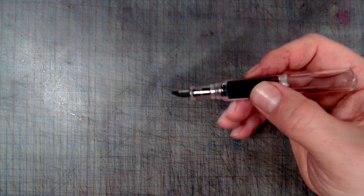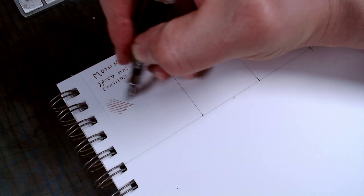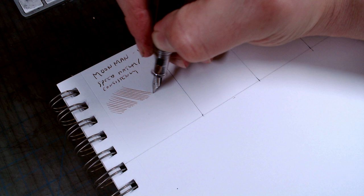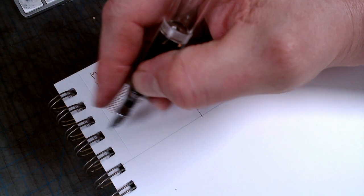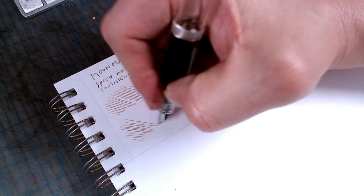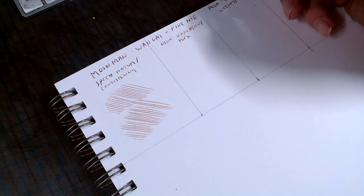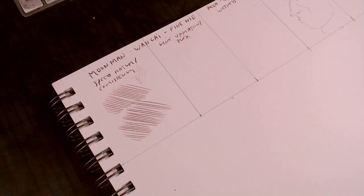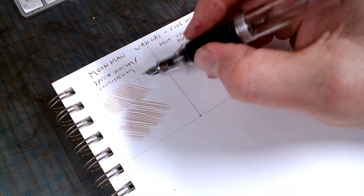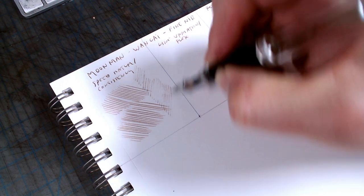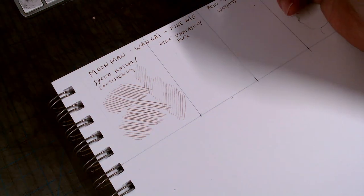Let's take this nib through my standardized three-part test. In my first test, I'm testing for consistency under pressure. Most pens will put down a line, but only a well-tuned nib will put down lines when those lines are put down very fast. This nib actually performed a little bit better than the other Moonman nibs I've tried, but that's really not saying all that much. You can see how inconsistent it is when I put down very fast strokes.